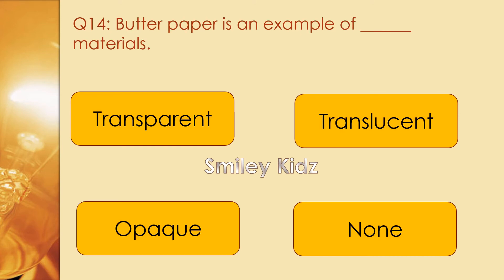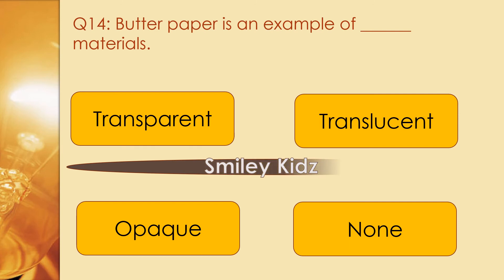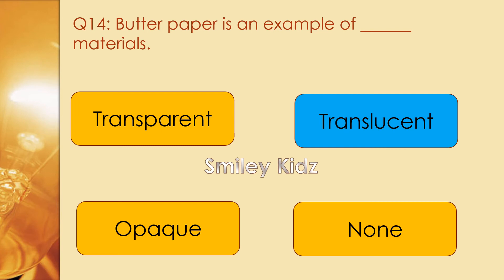Question number 14. Butter paper is an example of dash materials. Options are transparent, translucent, opaque, and none. The right answer is translucent. Butter paper is an example of translucent materials.